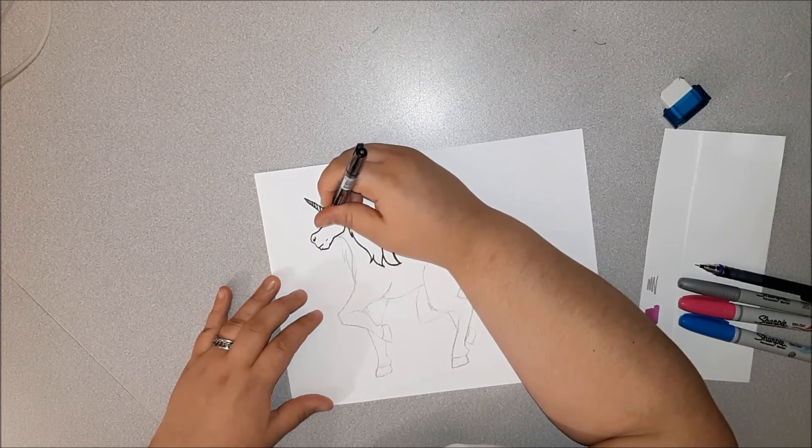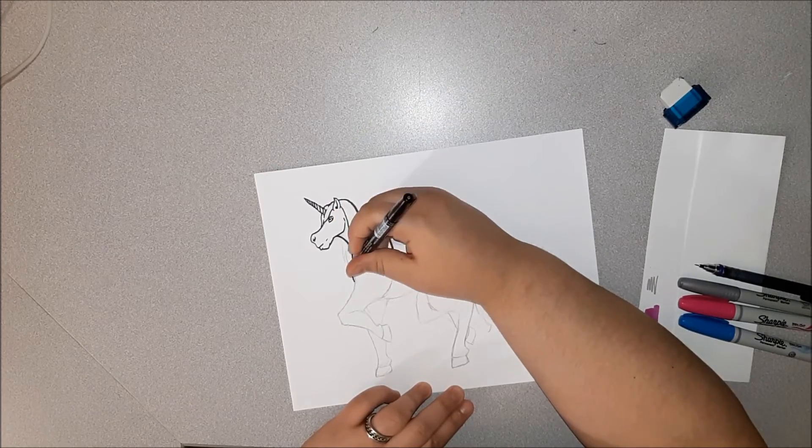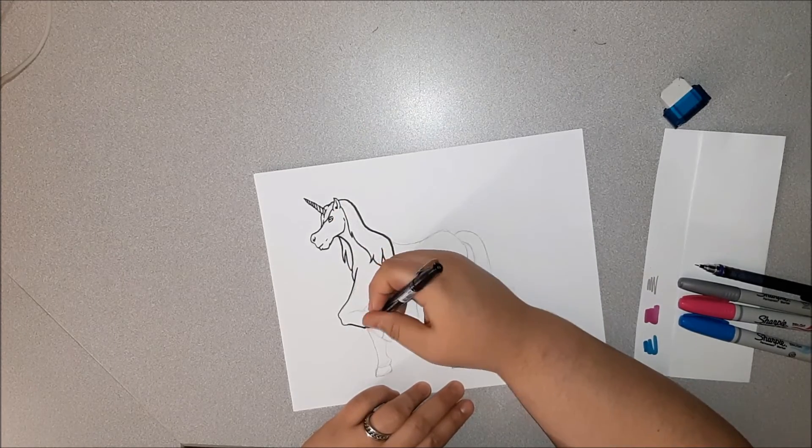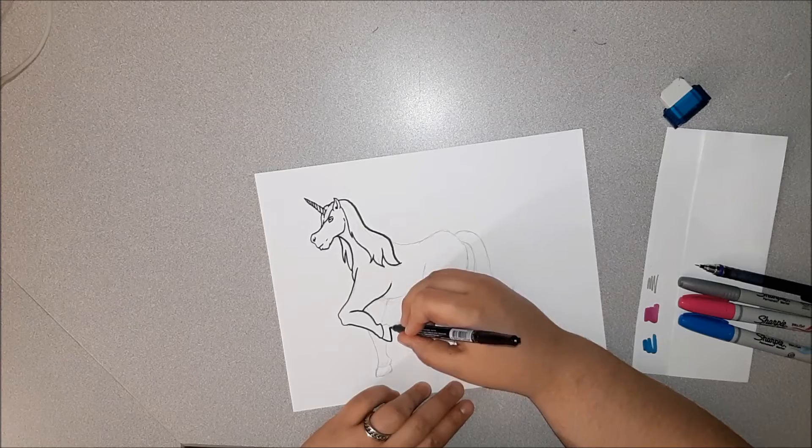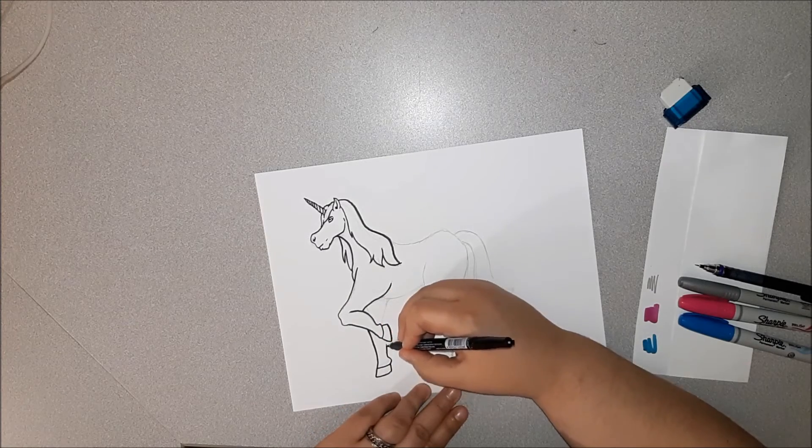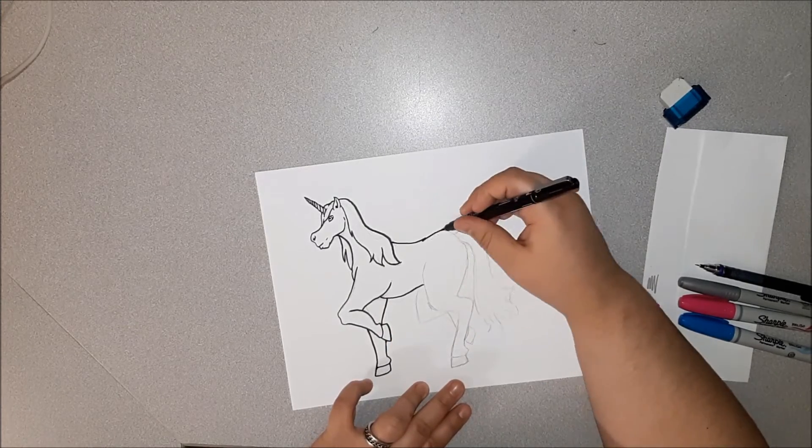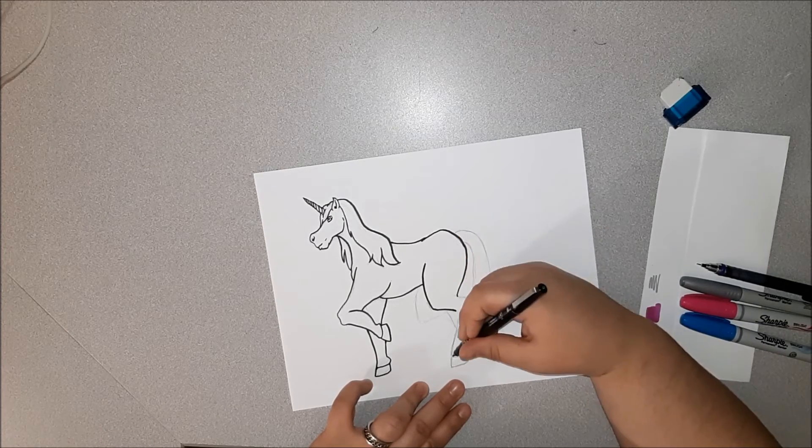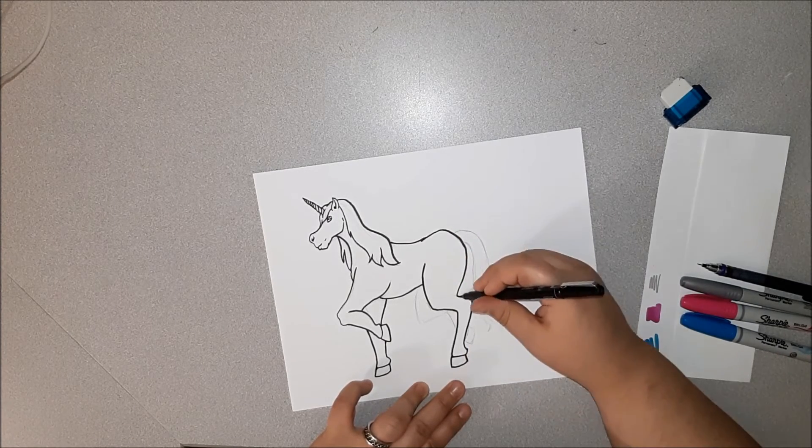And then we're also getting her little unicorn ducks, like bath ducks, rubber duckies, except they're unicorns. They still have a beak though.